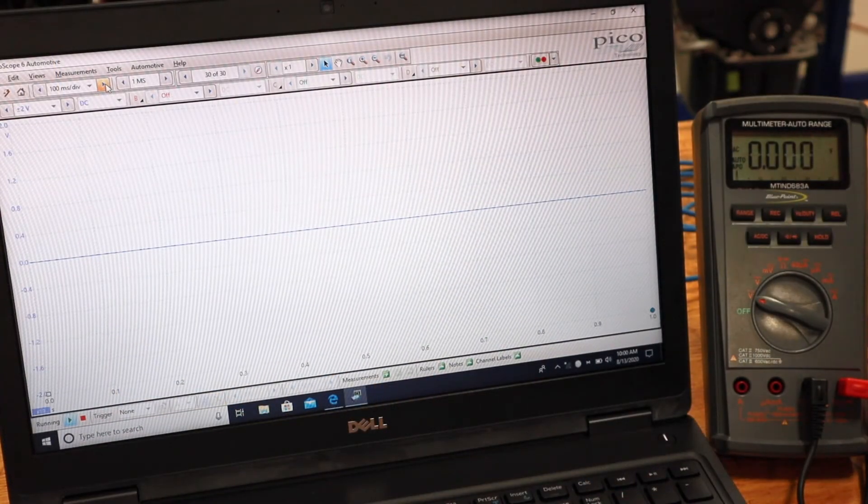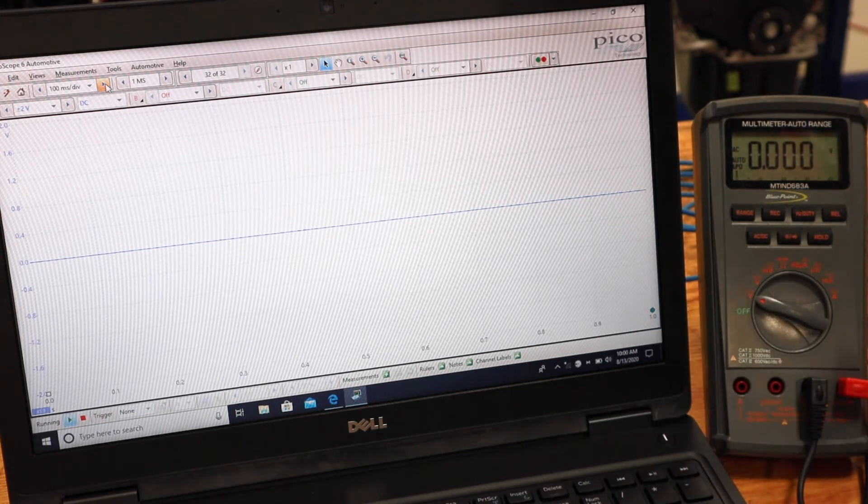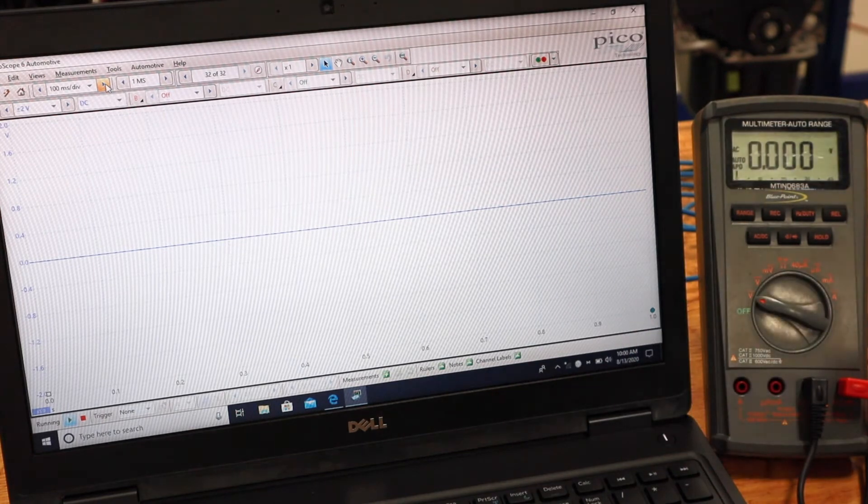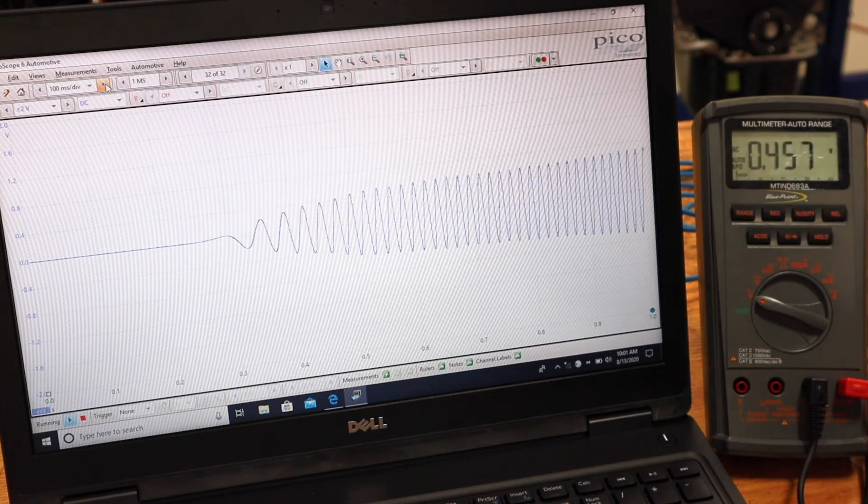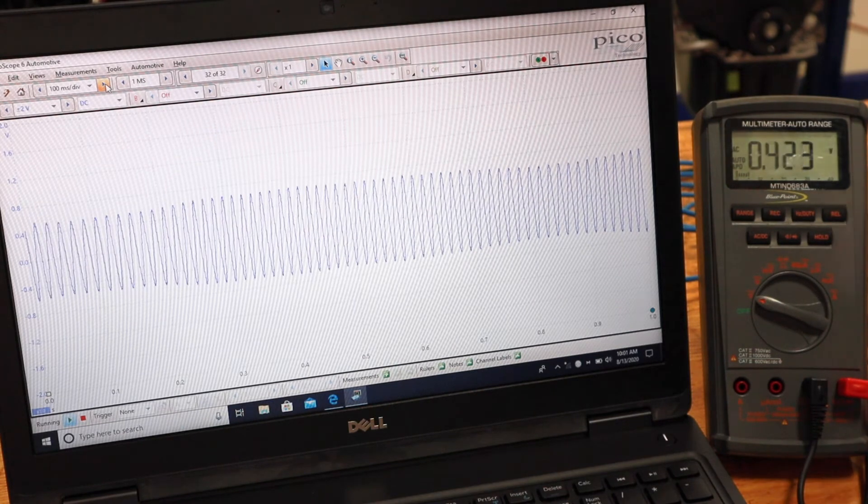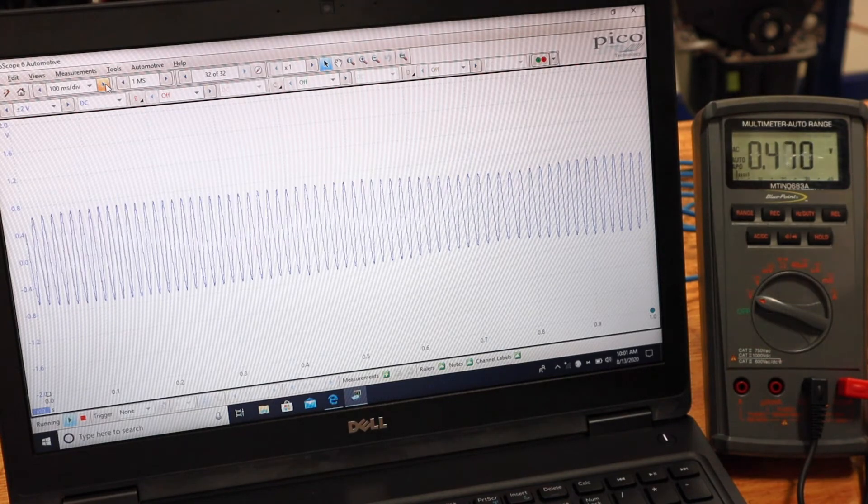A third way that we can measure this wheel speed sensor is with an oscilloscope. So I've got the Picoscope set up here. It is just in parallel. I've still got my meter connected so we can look at both screens and so here as I rotate I get about 0.4, 0.5 volts on my meter and on the scope you can see what's really happening.